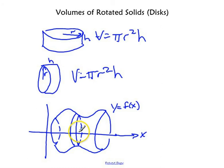the radius of each disk would vary depending on what my y value was. So here's the radius of this disk. And the thickness of the disk, instead of being h, is going to be dx